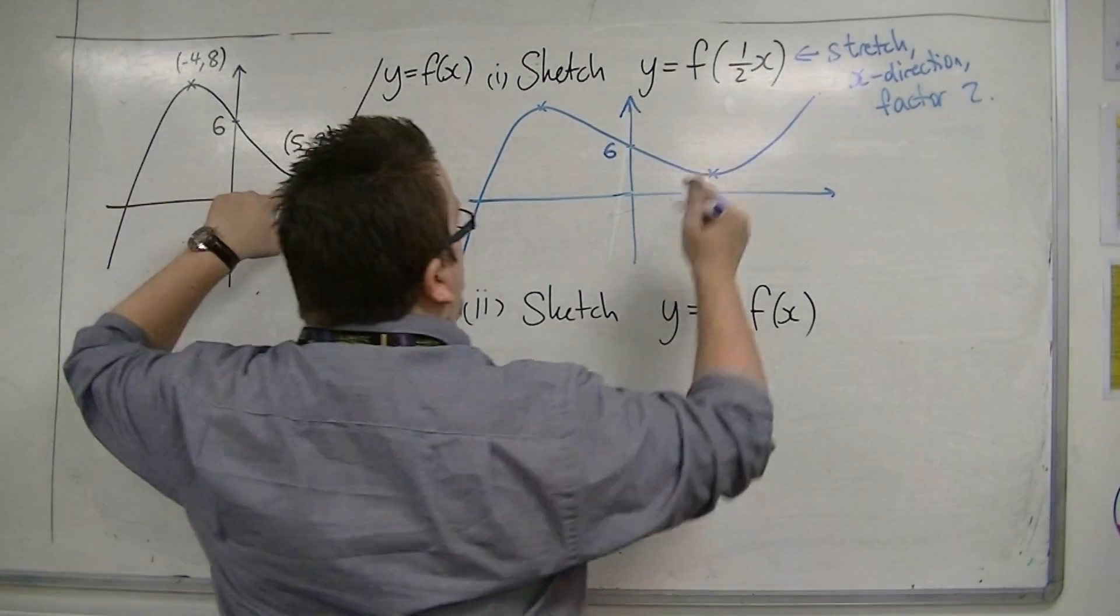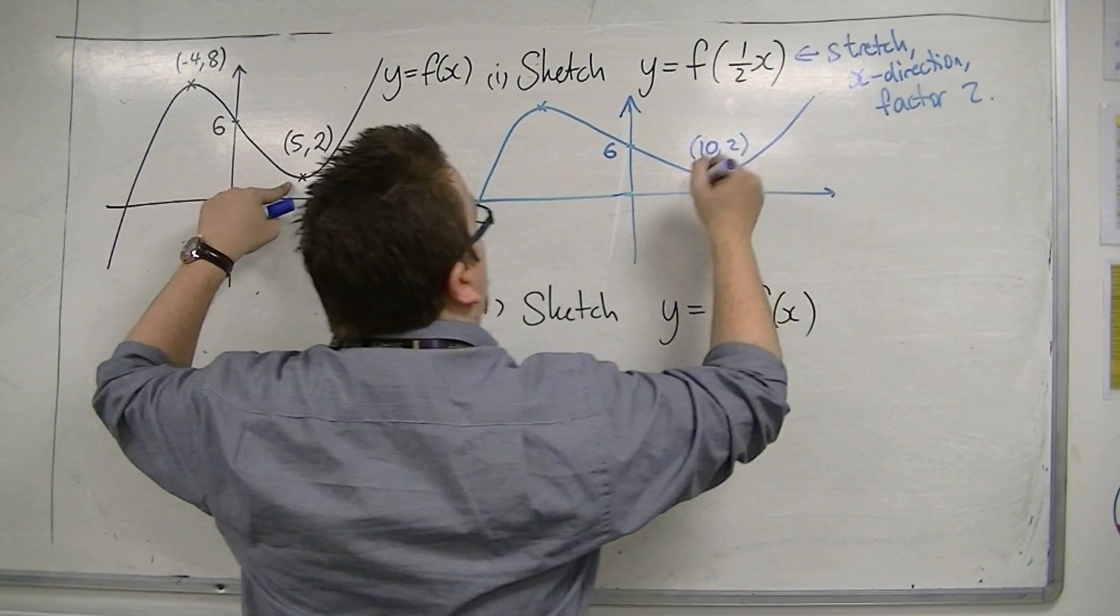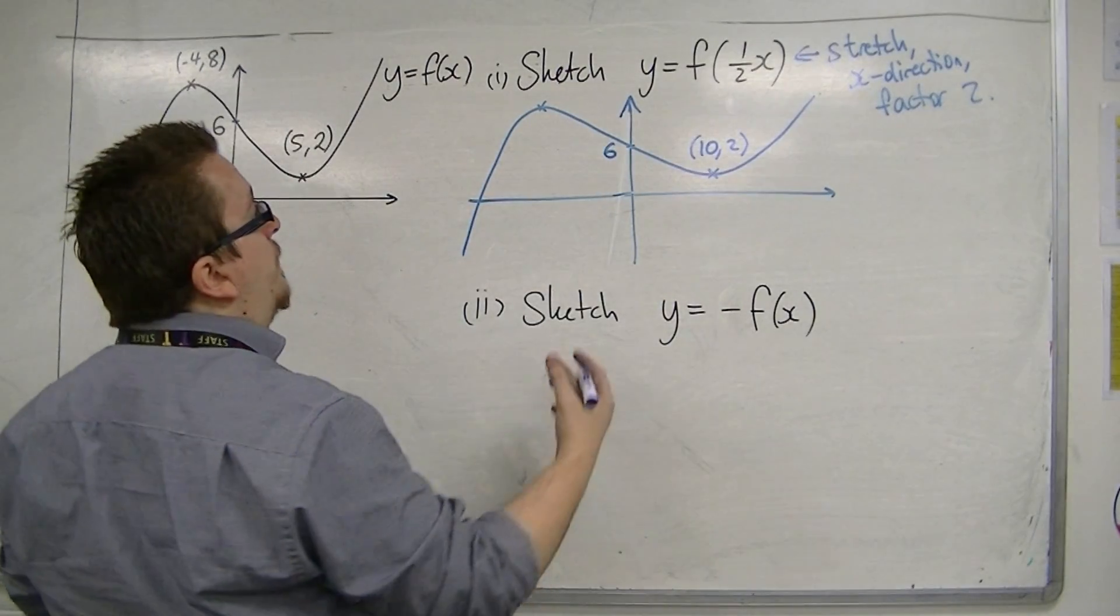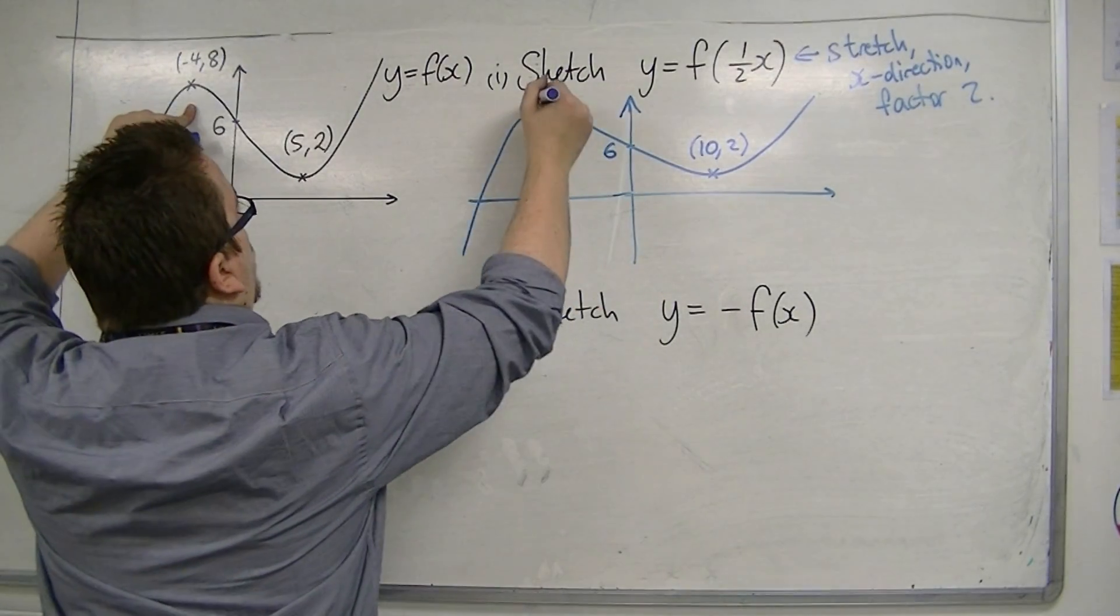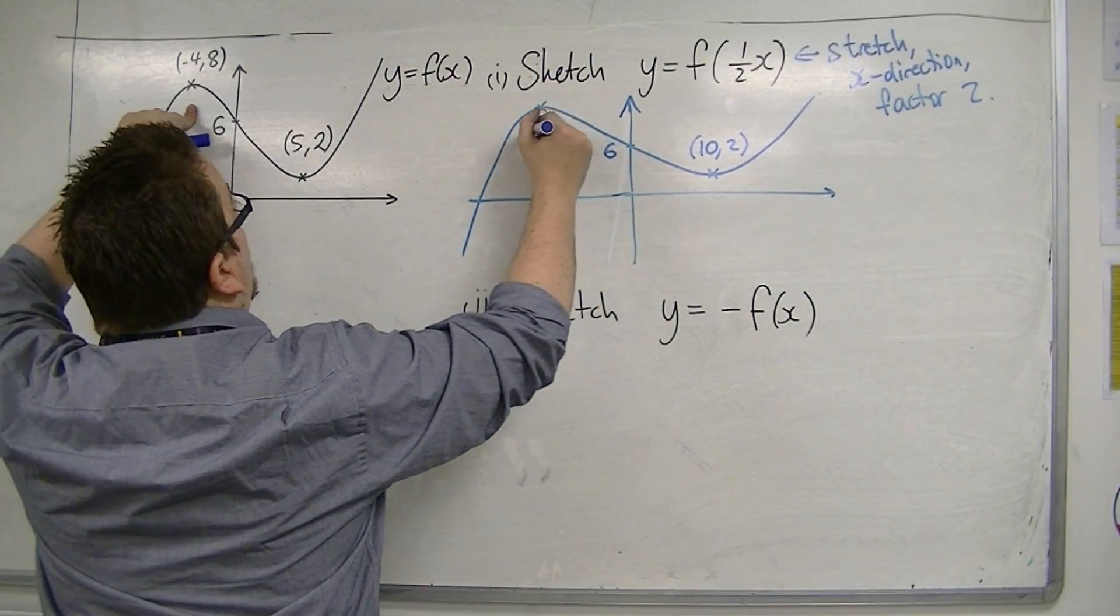5, 2 will have been stretched out to 10, 2. So the x-coordinate has doubled. And likewise, the x-coordinate of this stationary point will also have doubled.